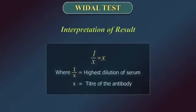If the highest dilution of serum is 1 is to x, then the titer of the antibody will be reported as x.